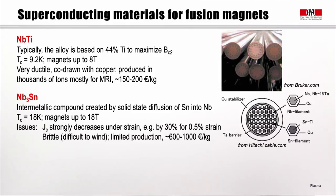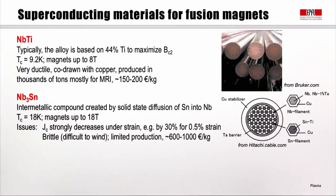Its cost is therefore not that high — about 150 to 200 euros per kilogram. The second kind of material is niobium-3-tin, an intermetallic compound created by solid-state diffusion of tin into niobium. It has a critical temperature of 18 Kelvin, and magnets made from it can go up to 18 Tesla, which is very interesting for fusion applications. However, the critical current density strongly decreases under strain — for example, 0.5% strain is sufficient to decrease it by 30%. It is a very brittle material, difficult to wind into coils, with quite limited production and a cost of about 600 to 1000 euros per kilogram.